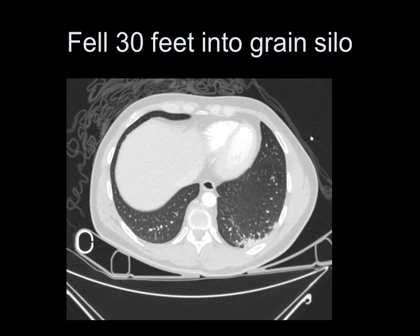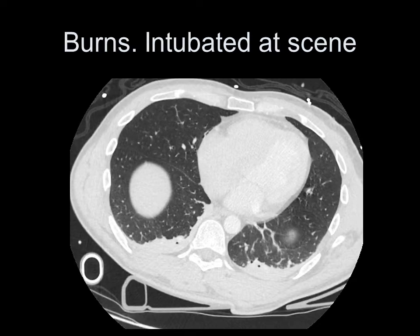Here's a patient who fell into a grain silo and this was called consolidation, but I wonder if the reporter was under some pressure to do so. There were no associated fractures. The air bronchograms here look quite clustered, and I'm thinking this is more an area of atelectasis, though I admit it's quite difficult.